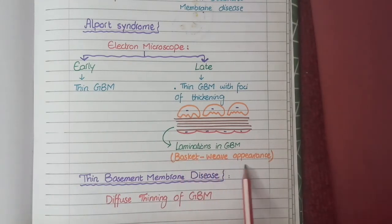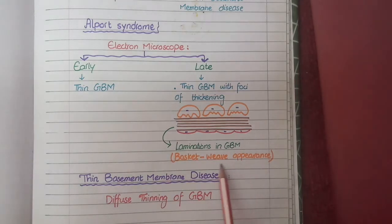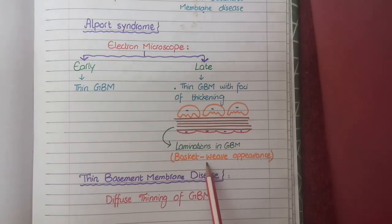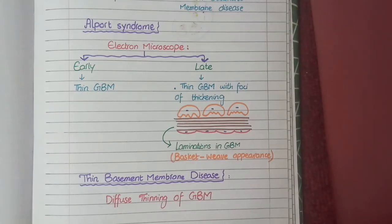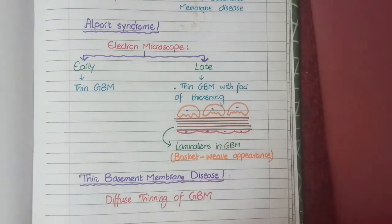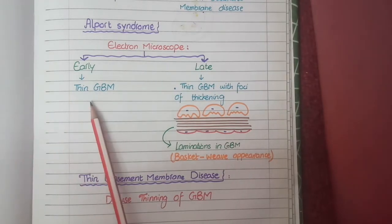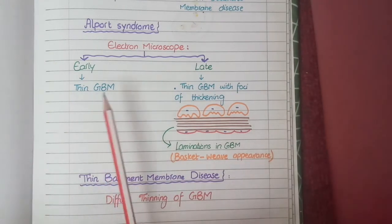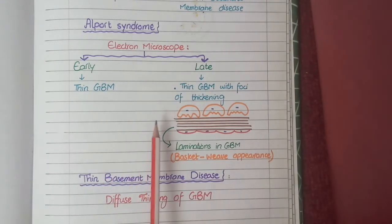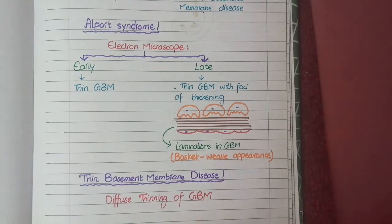This appearance of laminations in the glomerular basement membrane is known as basket weave appearance. It is called basket weave because it appears like the layers of a woven basket. So on electron microscopy of Alport syndrome, initially you see that the glomerular basement membrane is thin, and later you see laminations in the glomerular basement membrane, which is known as basket weave appearance.